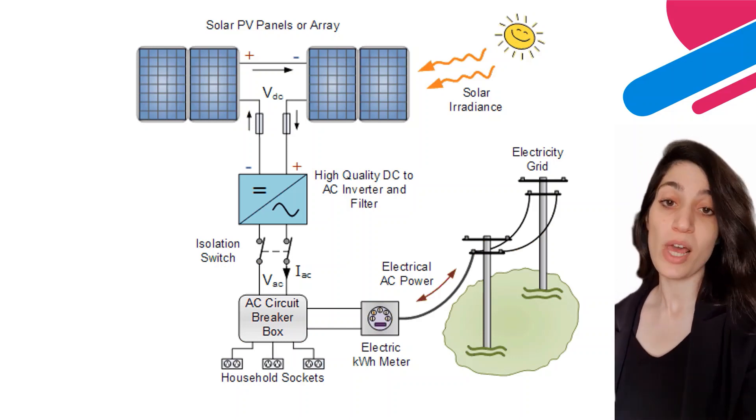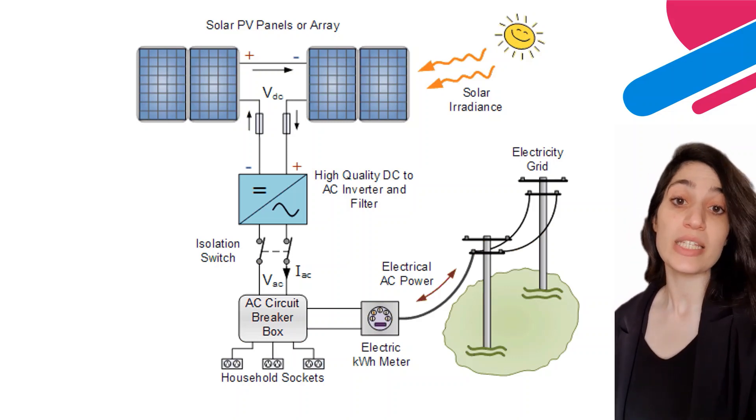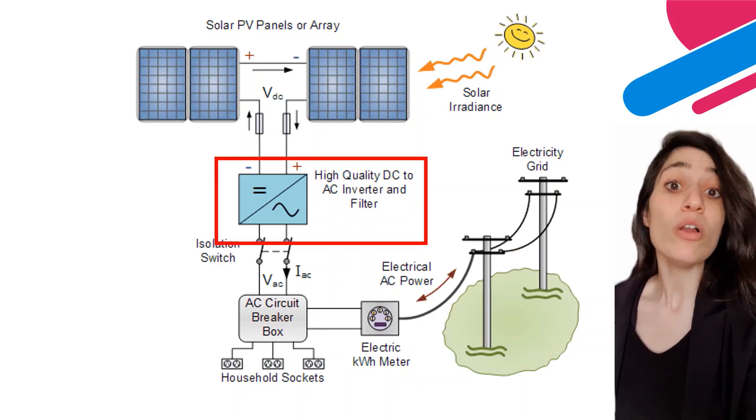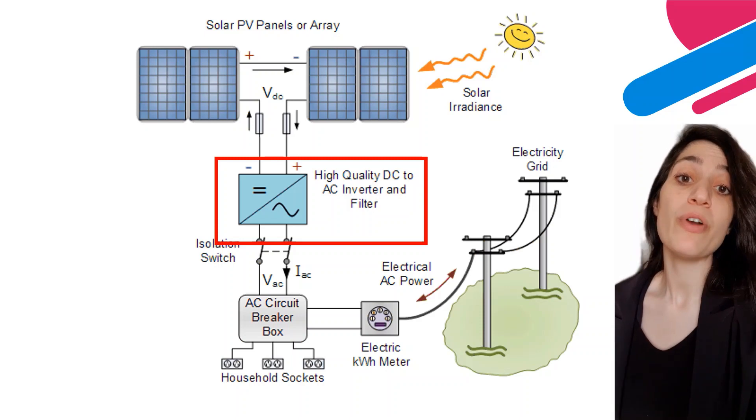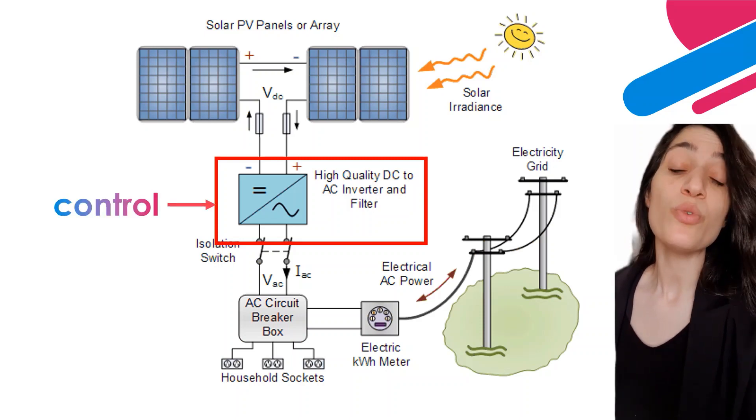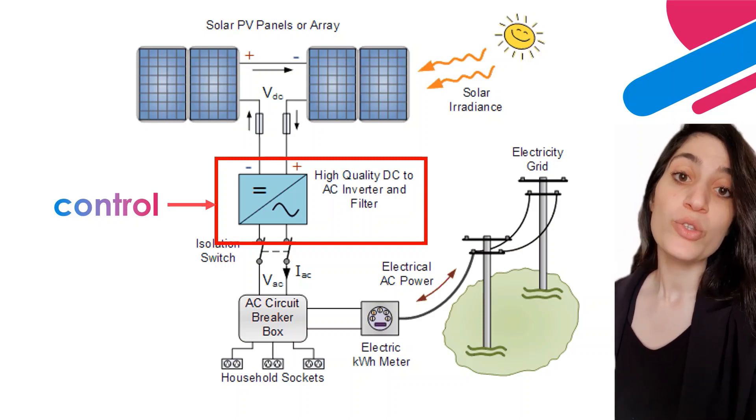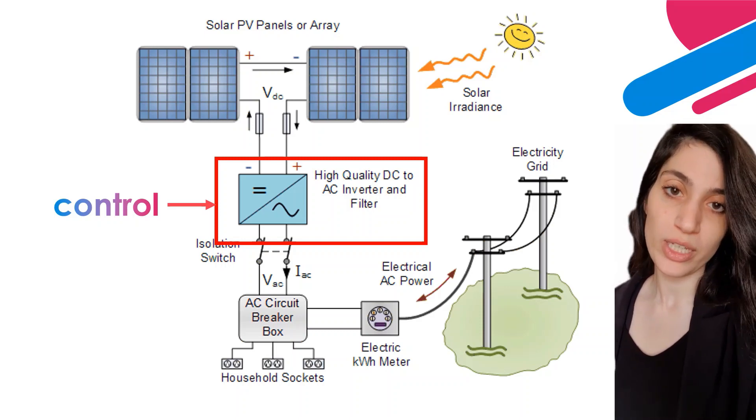We all know that renewable energies such as solar energy are connected to the grid through a DC-AC converter. And the goal of the converter is to convert DC power to high quality AC power. We can control this converter and we can design a proper control to ensure high quality AC power.